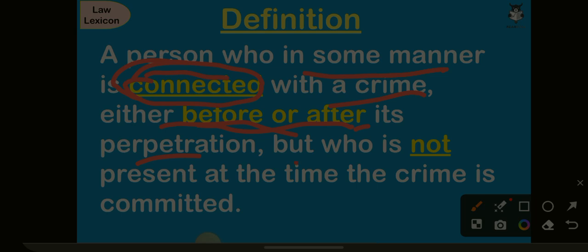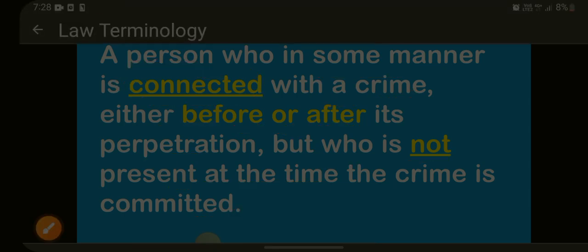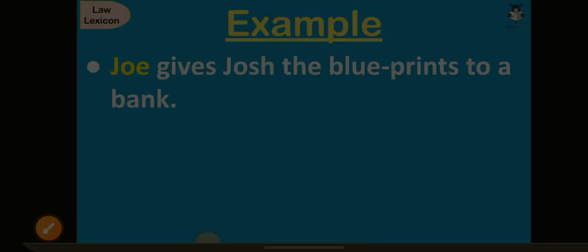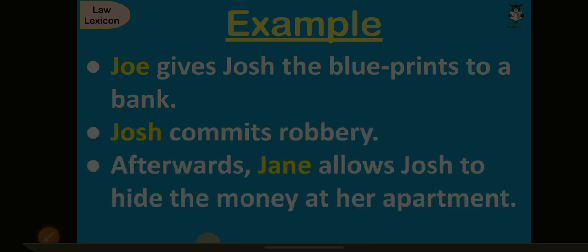He was not present at the time the crime is committed. So during the time the crime is committed he was not there, but he was involved in some way before or after the crime was committed. Let's see with an example.